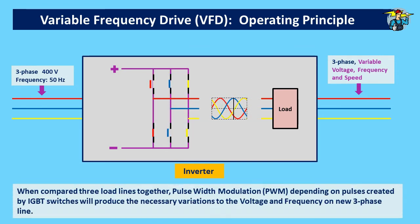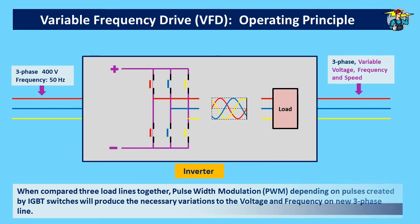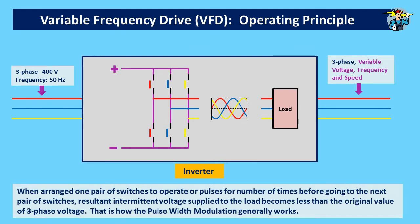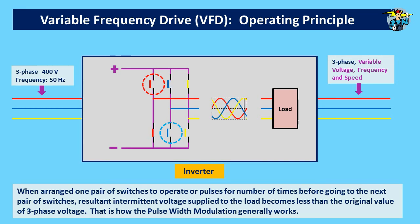When comparing the three load lines together, pulse width modulation, or PWM, depending on pulses created by the IGBT switches, will produce the necessary variations to the voltage and frequency on the new three-phase line. When one pair of switches is arranged to operate or pulse a number of times before going to the next pair, the resultant intermittent voltage supplied to the load becomes less than the original value of three-phase voltage. That is how pulse width modulation generally works.